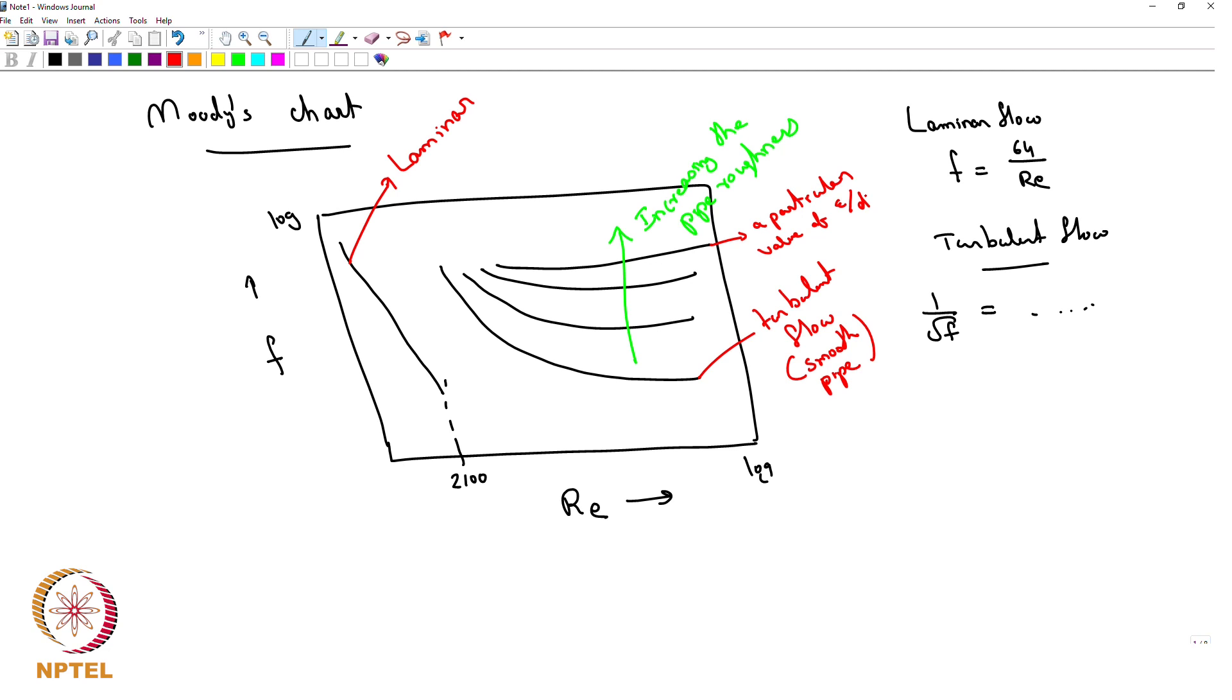Such a diagram becomes very useful because then you do not need to remember any correlations. Just use that given Reynolds number, look at your friction factor and use them for your design. All the calculations that we have done in the last few classes is compiled into such a diagram.